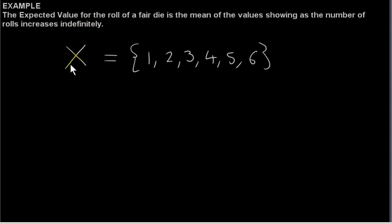Let X be the value showing when a fair die is rolled. We know that X must take on just one of these values, and the probability that X takes on any one of these values is one-sixth.